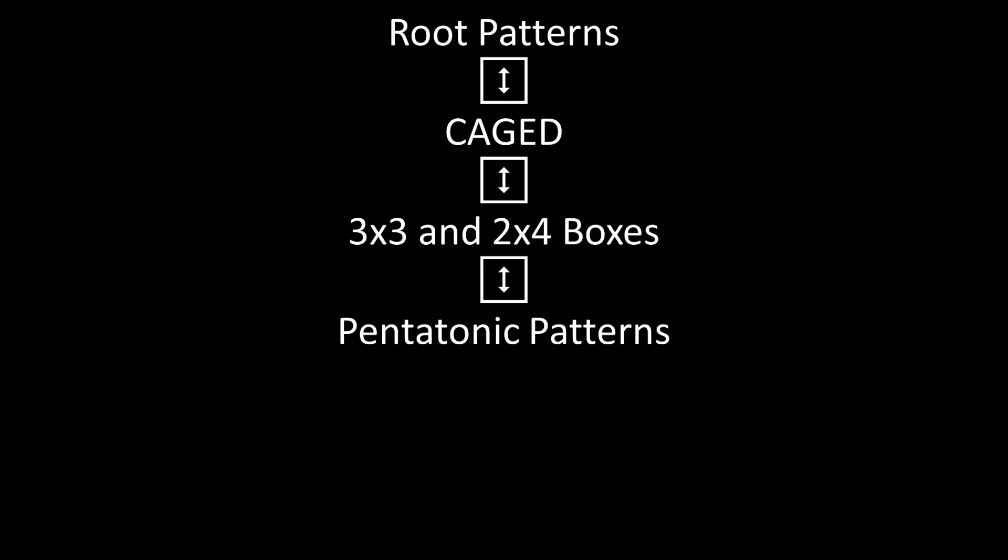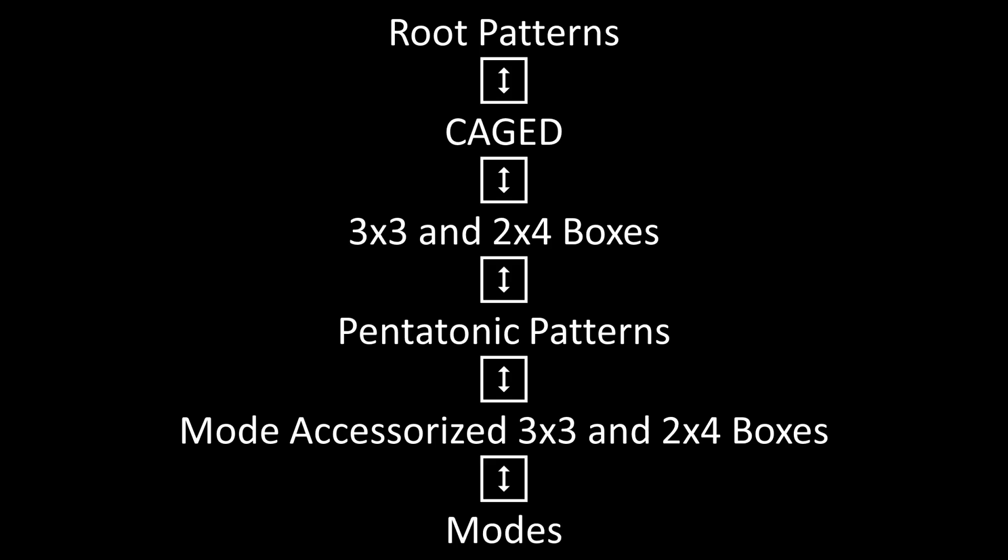Let's update our interlinking relationships. The root patterns link to caged which link to the 3x3 and 2x4 boxes, which link to the pentatonic patterns, which get accessorized by the desired mode to yield the full fretboard mode pattern.